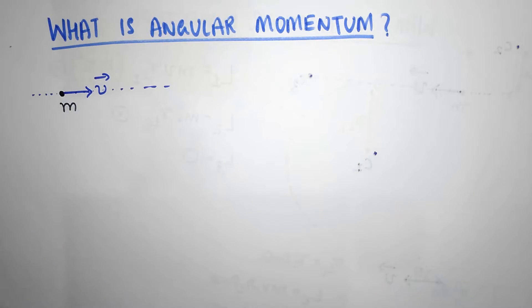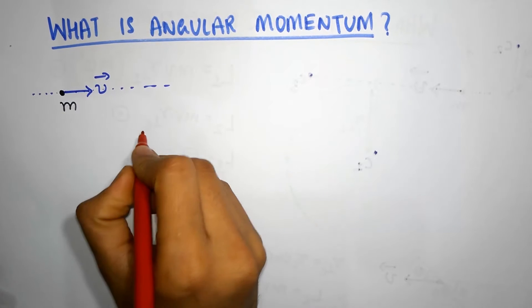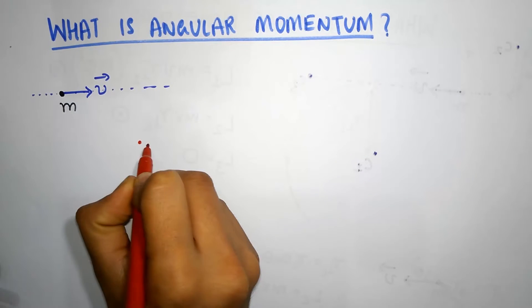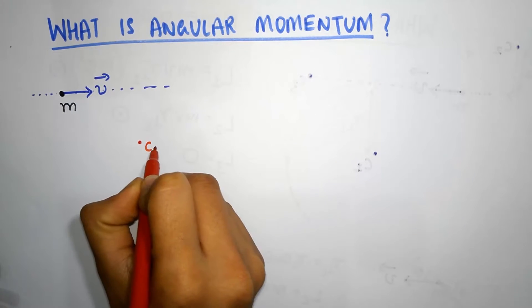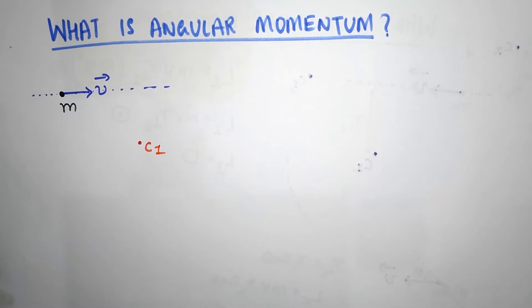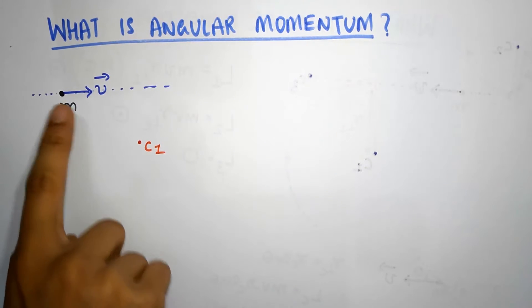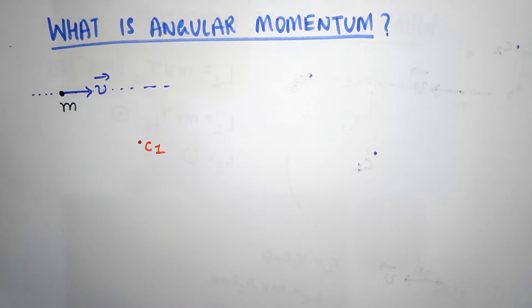To do that, first let's choose a reference point. Here is our reference point — it can be anywhere in space. I'm going to call this reference point C1. I'm going to tell you how to define angular momentum with respect to this point.